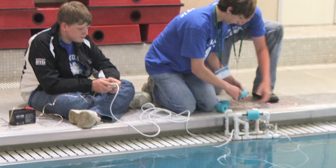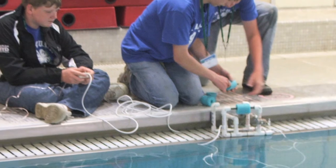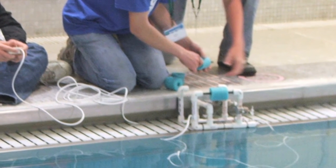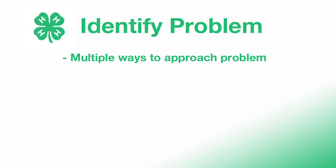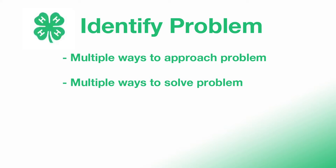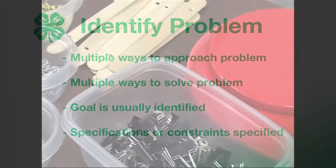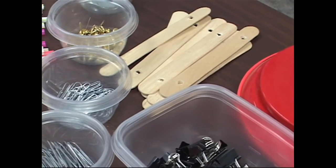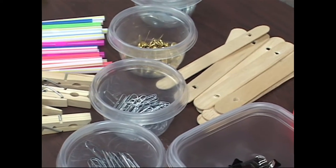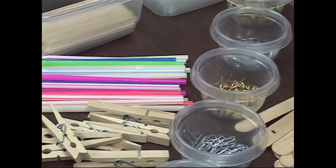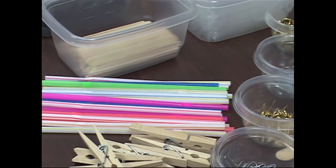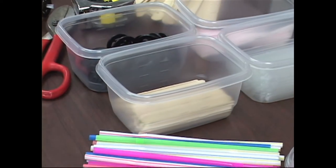The design process starts with a challenge or issue — a problem. It is usually complex, with multiple ways to approach and solve the problem. The goal or desired outcome is usually identified. Often certain specifications or constraints that the solution must meet are also specified: a limit to supplies and materials, the cost of the solution, a deadline to meet, or other factors such as weight, size, or strength criteria.